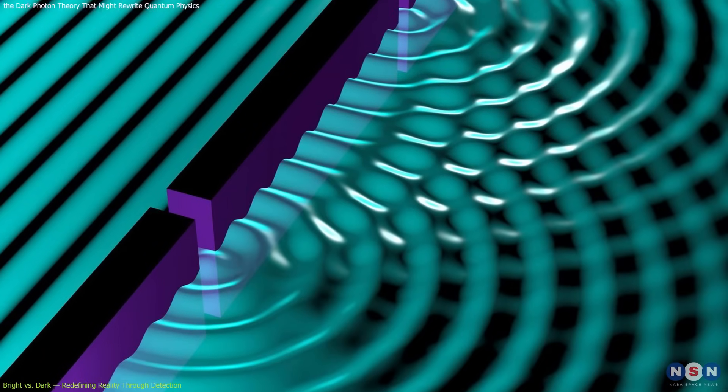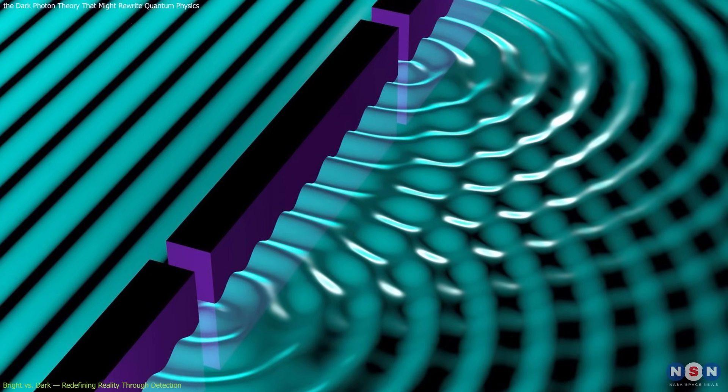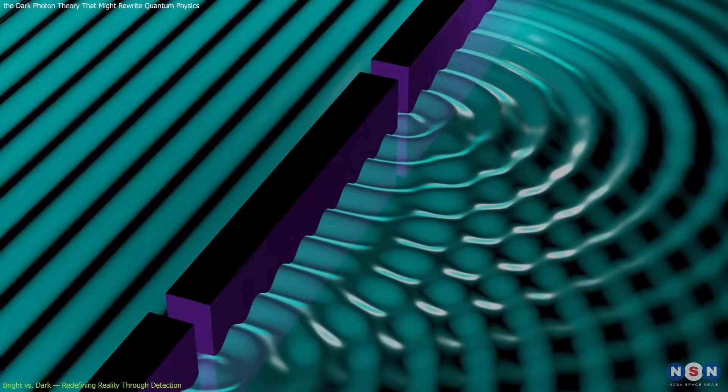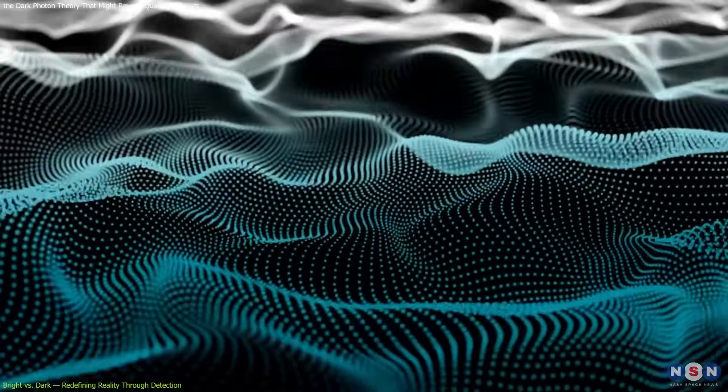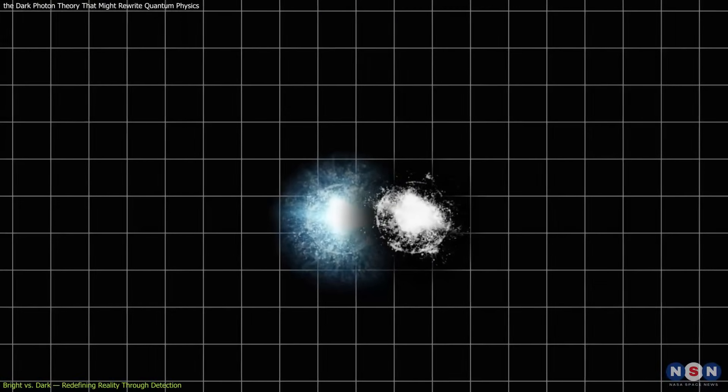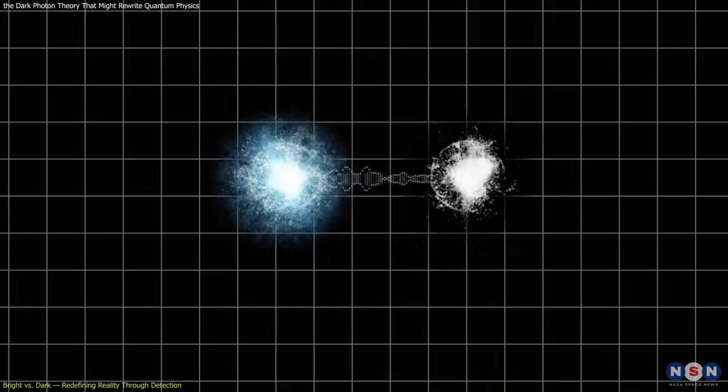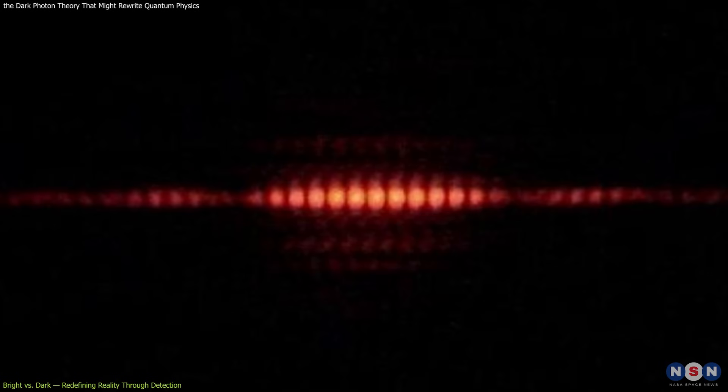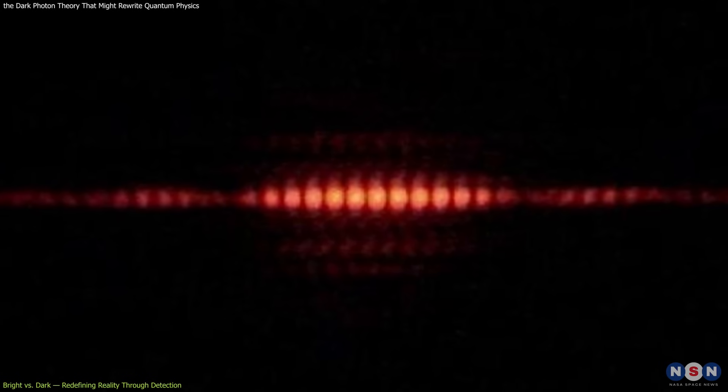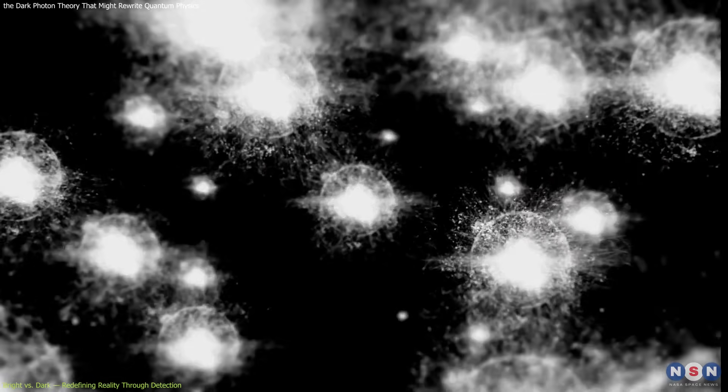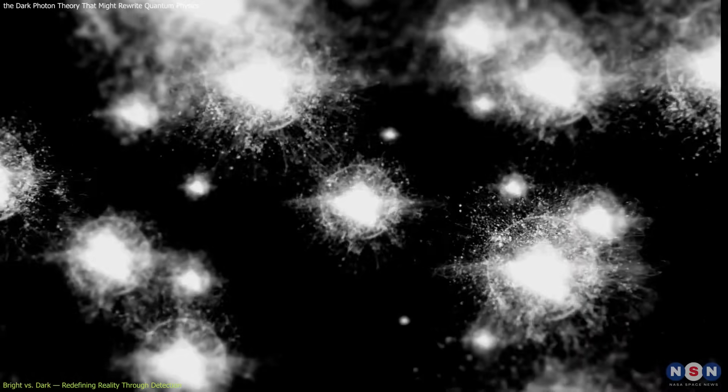Here's the mind-bending part. The interference pattern we associate with wave behavior isn't caused by waves spreading in space, but by quantum entanglement between these two photon modes. The bright states create the observable fringes on the detector. The dark states, meanwhile, occupy regions we once assumed were empty, the zones of destructive interference.